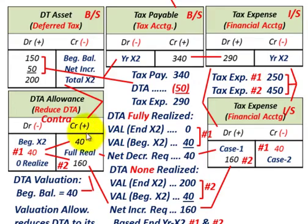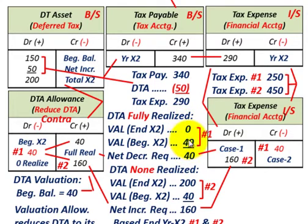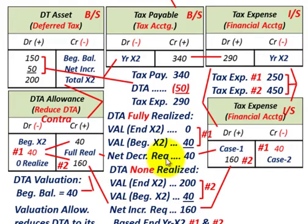You take your beginning balance of $40,000 — that's going to have to go down to zero in your deferred tax allowance account. So you have a net decrease required of $40,000.